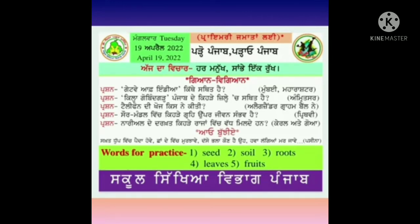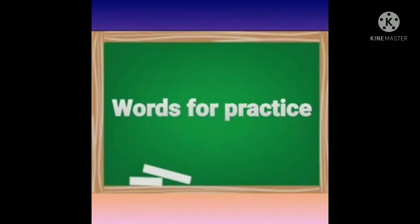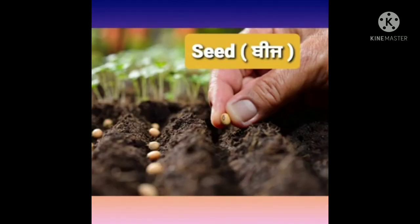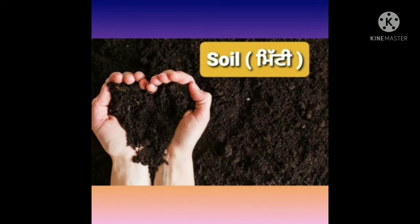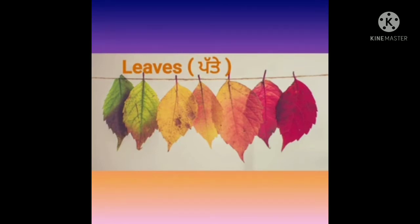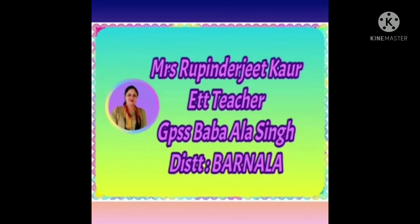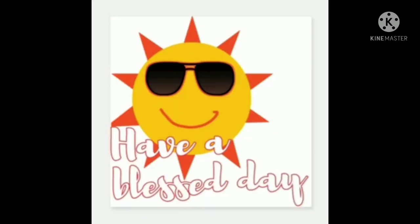ਰਿਡਲ: ਸਖ਼ਤ ਟੁੱਪ ਵਿੱਚ ਪੈਦਾ ਹੋਵੇ, ਸ਼ਾਦੀ ਵਿੱਚ ਮਰ ਜਾਵੇ, ਹਵਾ ਲੱਗਣ ਨਾਲ ਮਰ ਜਾਵੇ। ਜਵਾਬ ਹੈ ਪਸੀਨਾ। Words for practice: Seed S-E-E-D - ਬੀਜ। Soil S-O-I-L - ਮਿੱਟੀ। Roots R-O-O-T-S - ਜੜ੍ਹਾਂ। Leaves L-E-A-V-E-S - ਪੱਤੇ। Fruits F-R-U-I-T-S - ਫਲ। ਅੱਜ ਦੀ ਸਲਾਈਡ ਕੰਪਲੀਟ ਹੋਈ। Take care all of you and have a blessed day.